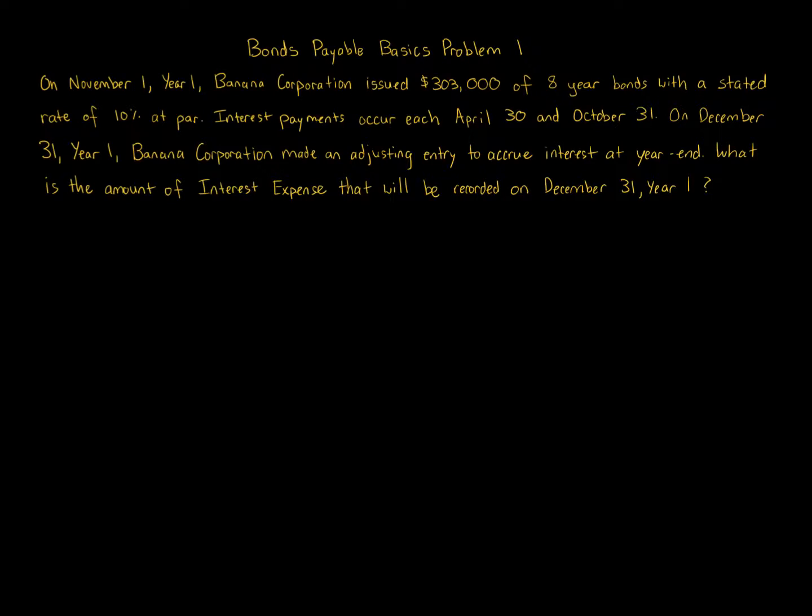We're asked to calculate the interest expense that will be recorded on December 31st, Year 1. Nothing in the question prompt suggests what kind of asset. It's not an asset, it's going to be a liability type item because it says interest expense. We're not receiving interest, we're paying interest. Make sure you understand that. It could be note payable, it could be another liability, it could be a bond. Here, we have bonds.